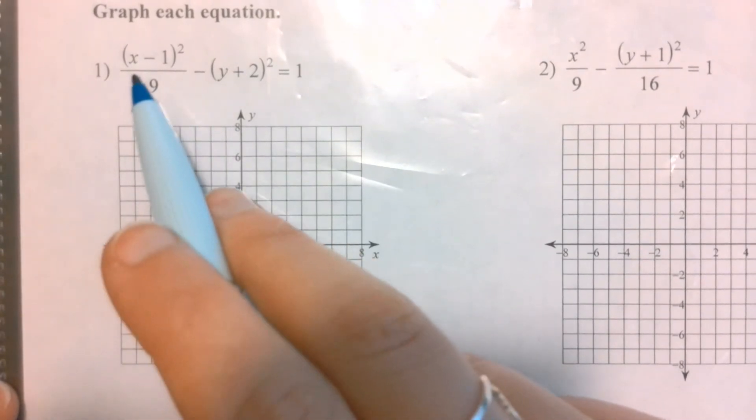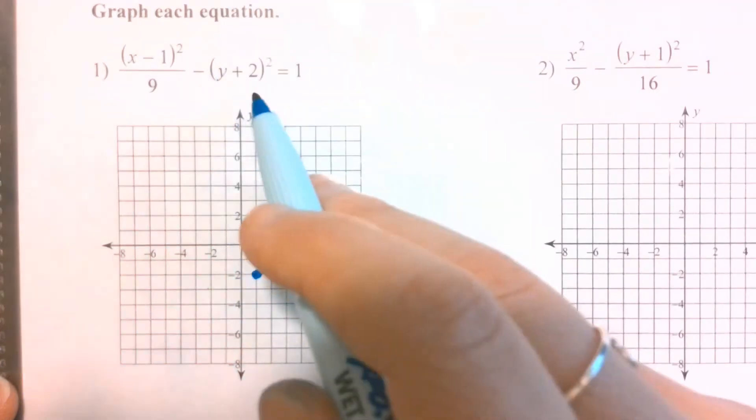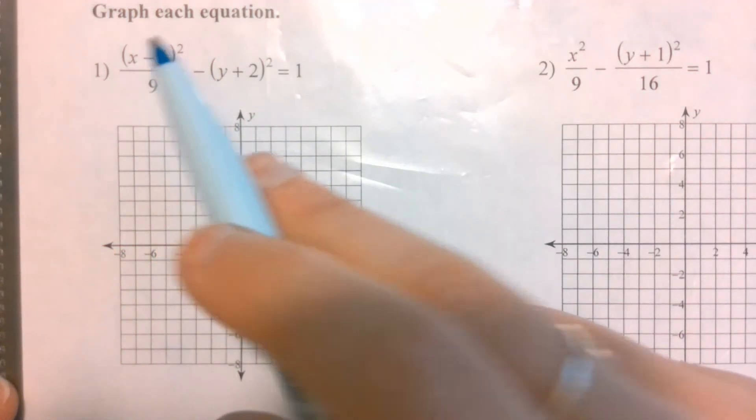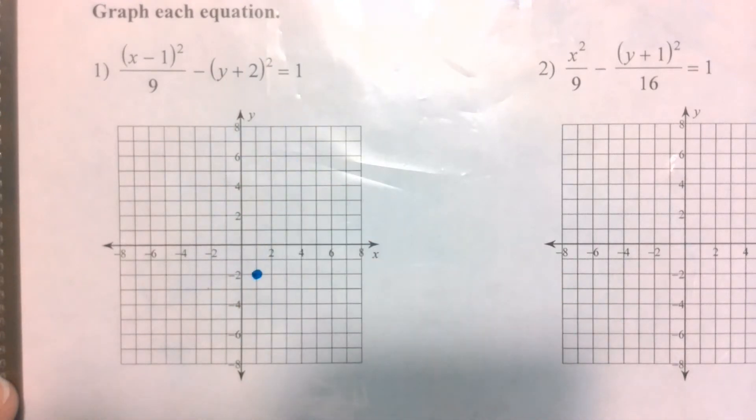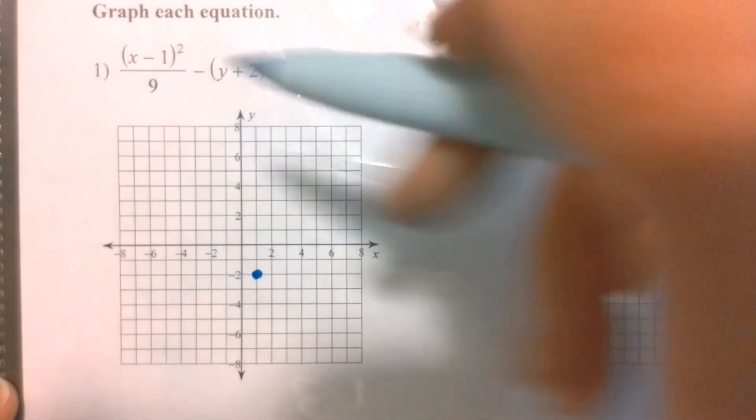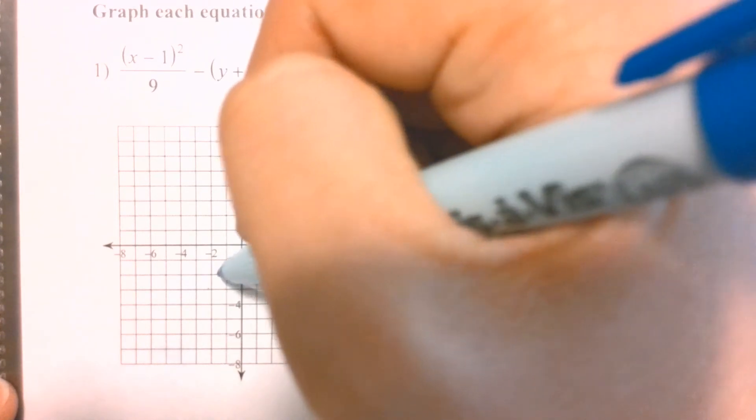So same as with the circle and the ellipse, I'm going to start with the center. So my center here is going to be at (1, -2). Remember that the y could be the leading term, so be really careful there that you're going with what is with the x, what is with the y in that order. So I've got (1, -2). And then looking at what is underneath my x value, taking the square root is going to tell me that I will go 3 to the right and 3 to the left.